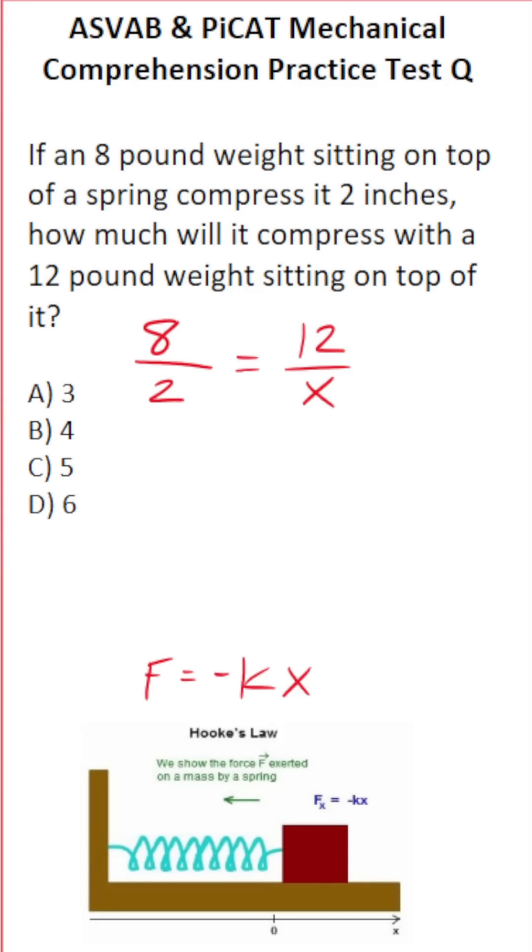To solve proportions, you use cross-multiplication. 8 times x is 8x. 12 times 2 is 24. Solve for x by dividing both sides by 8.